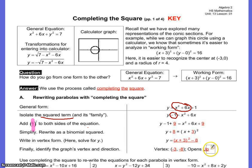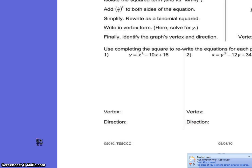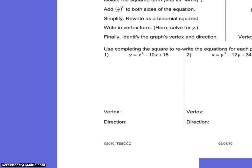We're going to use that same method and complete one together. Just like number 1, I'm going to need to separate everything that's not the same family — so I'm going to have to move my 16. What I get is y minus 16 equals x² minus 10x.